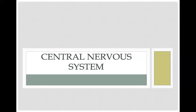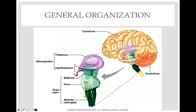Hi everybody, today we are starting our central nervous system lecture. We're going to start by looking at the central nervous system anatomy and then dive into the physiological aspects. When talking about the central nervous system, we know it's broken down to your brain and your spinal cord, and today's focus is only going to be on the brain.